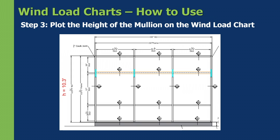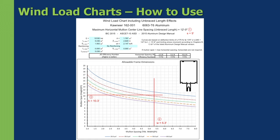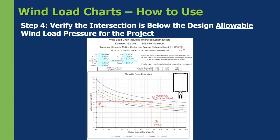Step three is determining the height of the mullion. In this case our height is 10.3 feet. Similar to step two, we go to the vertical axis, plot our mullion height of 10.3 feet, and where the two lines intersect is where we look — that tells us the allowable pressure for the mullion. In this case we're at roughly 26 psf, which we can read from the graphed lines shown on the chart.